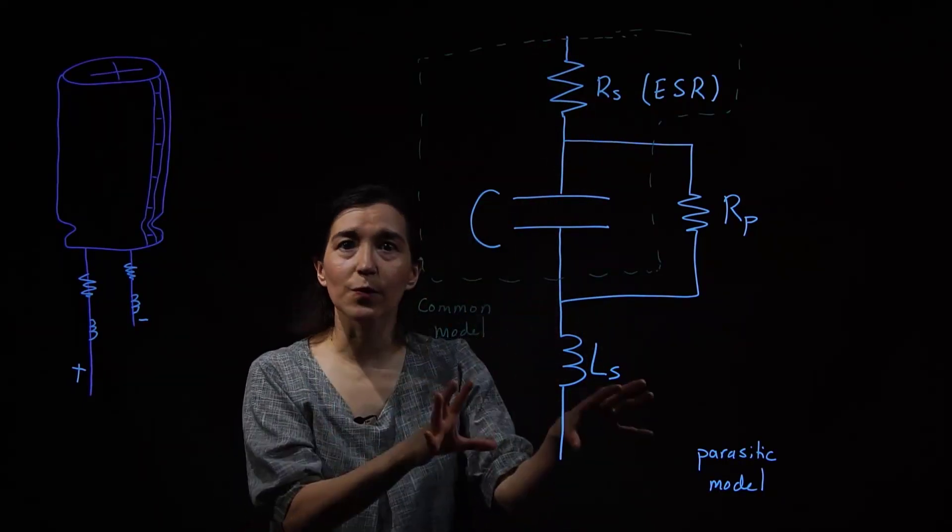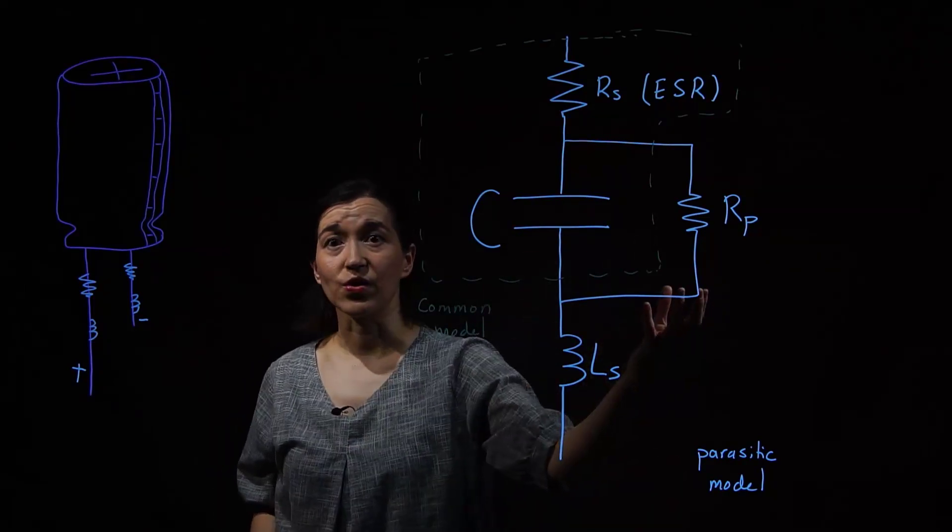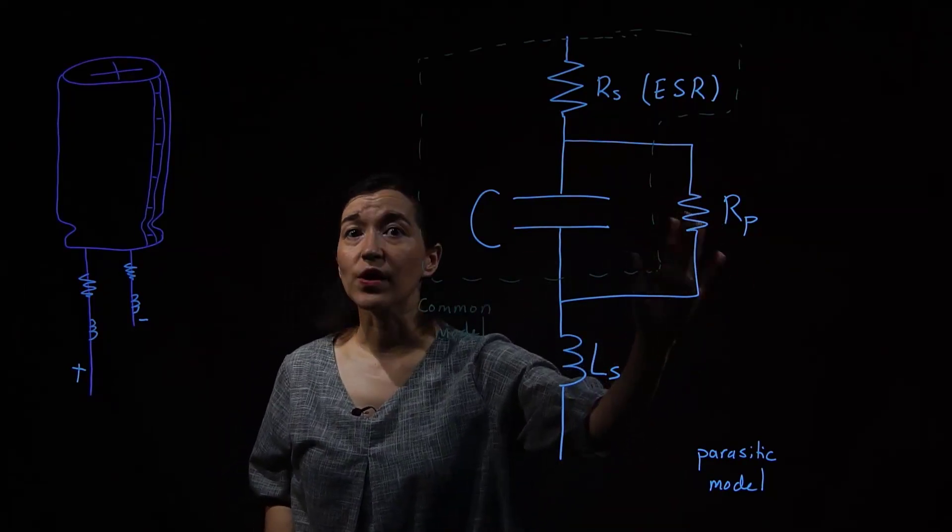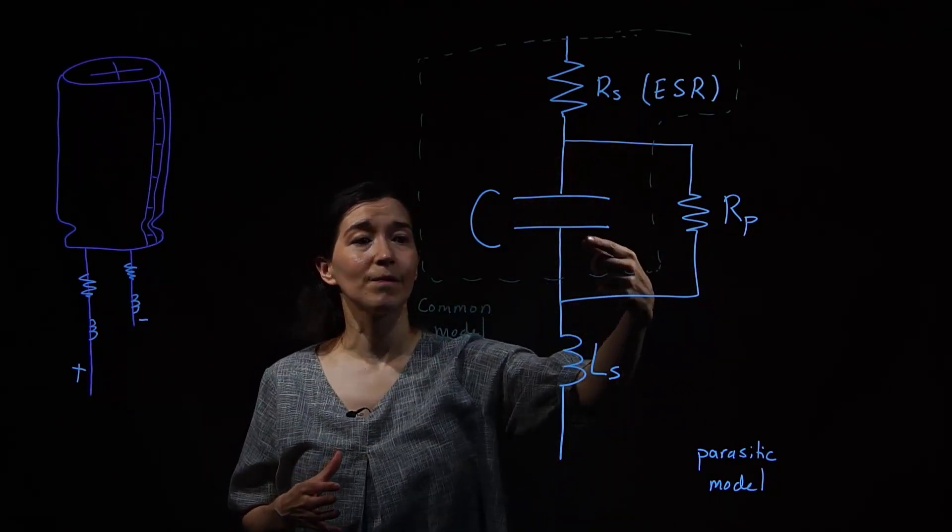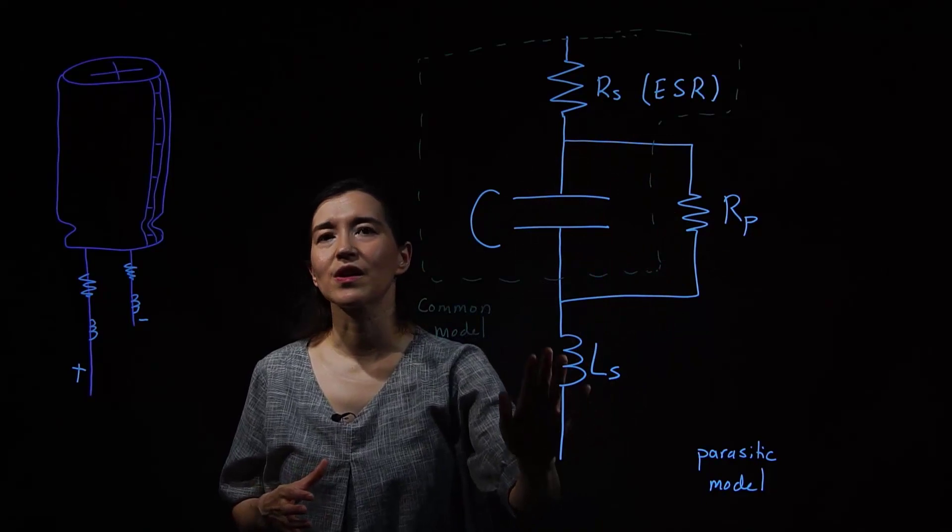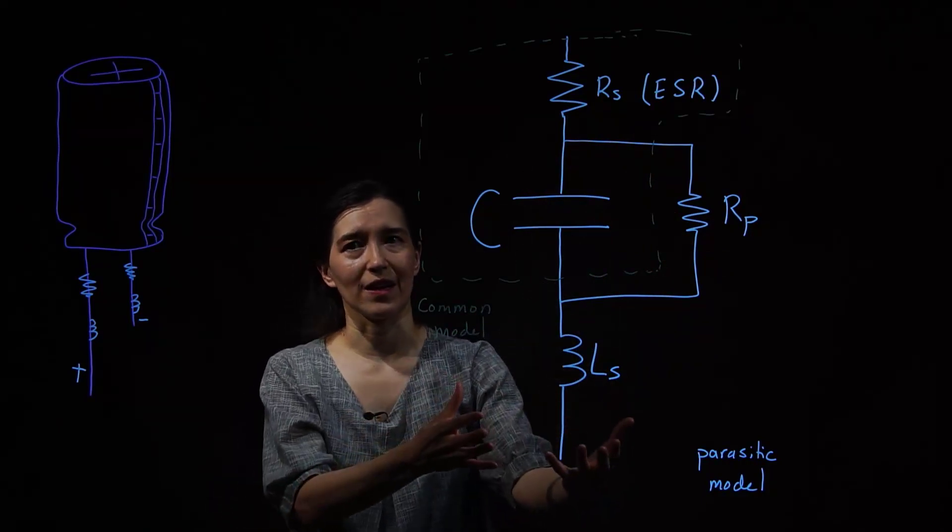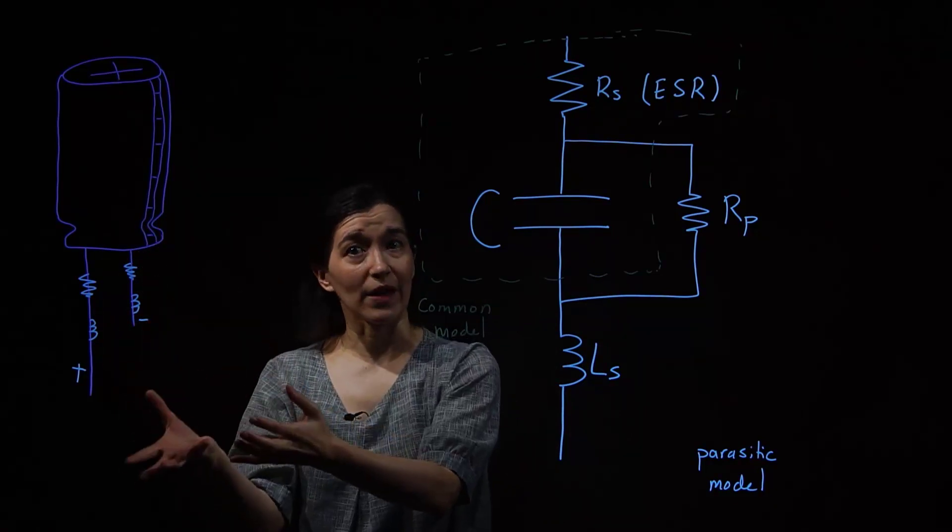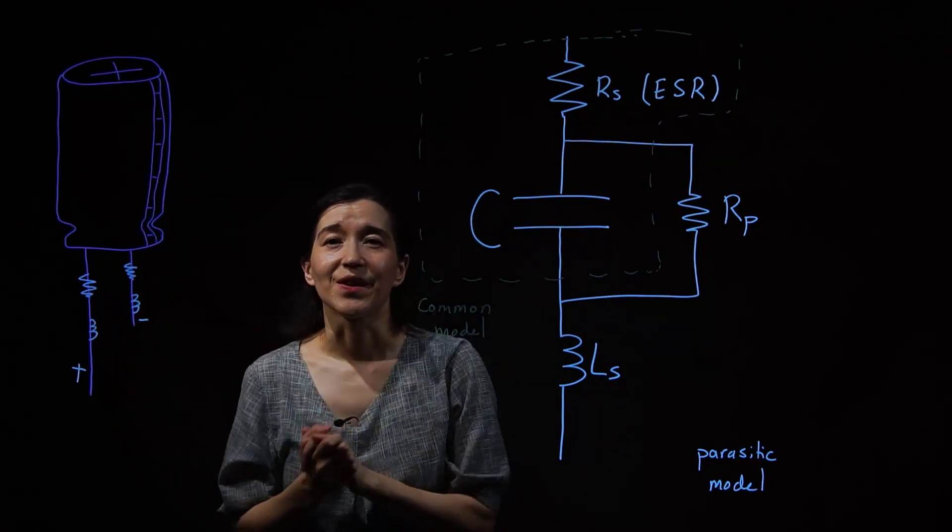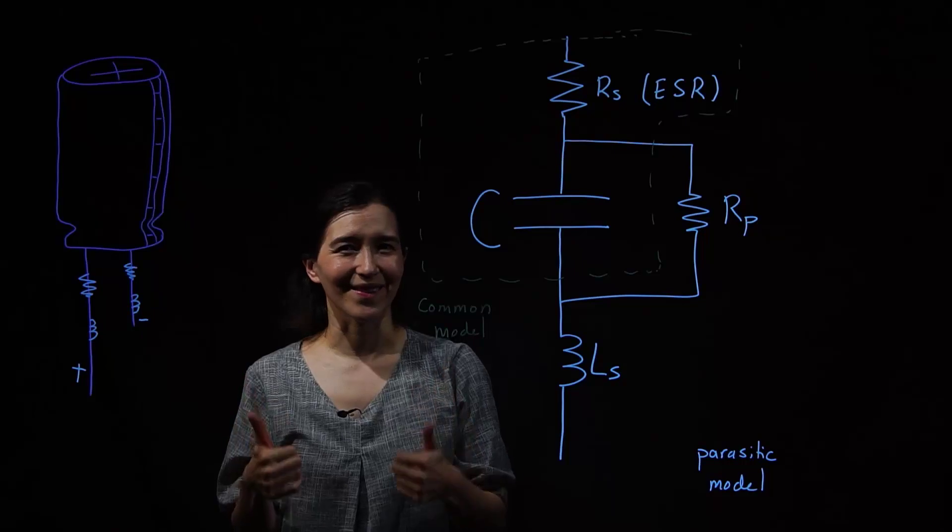If we want to go into the full parasitic model, we also should include the parallel resistance, which is also referred to as leakage because it's the charge leaking out of the capacitor, and the series inductance, which would affect the dynamics. And these all stem from the physical models of the actual capacitor. So you can use this now to model more realistic capacitors.